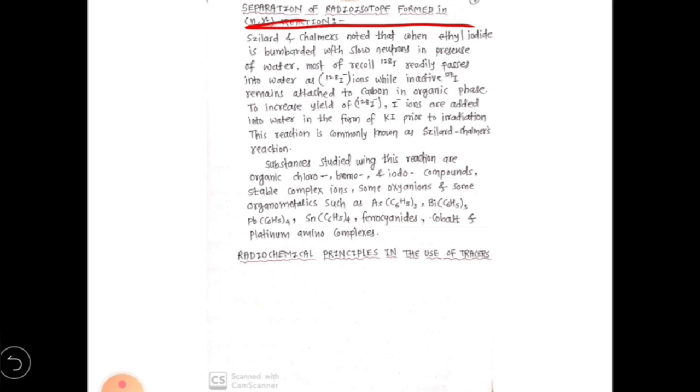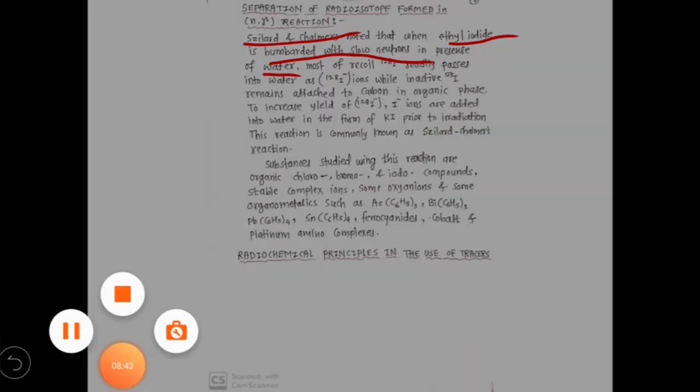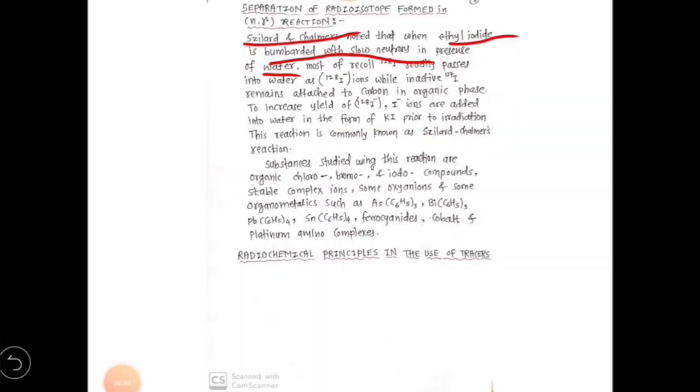Szilard and Chalmers have noted that when ethyl iodide is bombarded with the help of slow neutrons in presence of water—here we have taken two different phases: one is water and other one is organic phase, that is ethyl alcohol—when this ethyl iodide is bombarded with slow neutrons, then we get the formation of iodine-128 recoil.